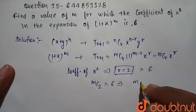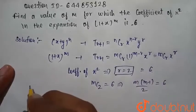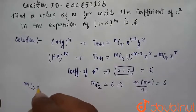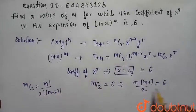We write that m into m minus 1 divided by 2 is equal to 6, by mC2 formula. That is mC2 equals m factorial divided by 2 factorial into m minus 2 factorial.